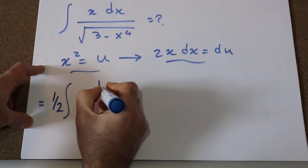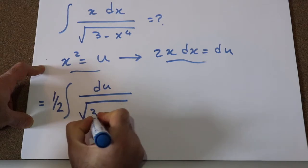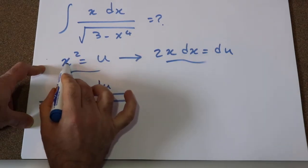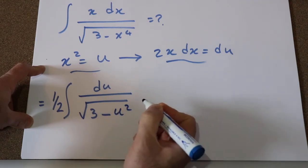I write 1 divided by 2, which is constant, I take it out of the integral, du divided by square root of 3 minus x to the fourth. x squared is u, therefore x to the fourth is u squared.